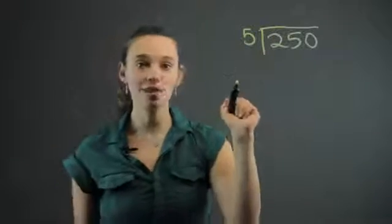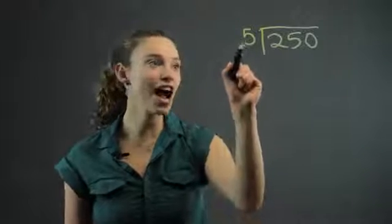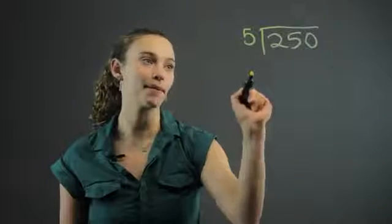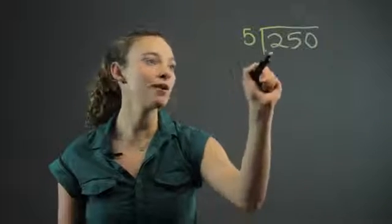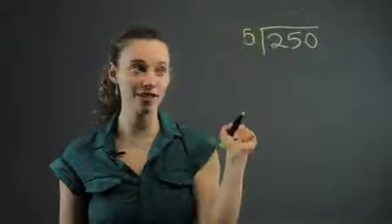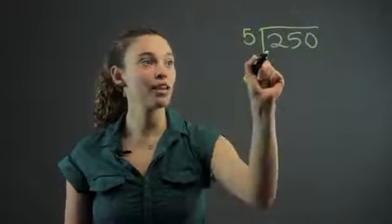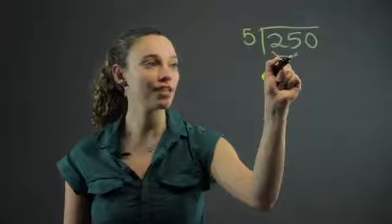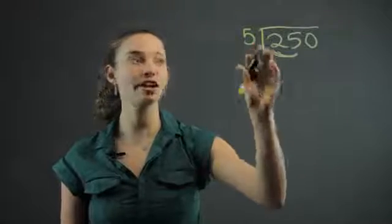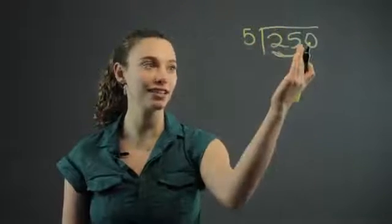Now, we always start by asking ourselves, does 5 go into the first number? Does 5 go into 2? No. So we don't put anything above the 2. Now, we include both numbers. If it doesn't go into the first number, you start including the second digit.